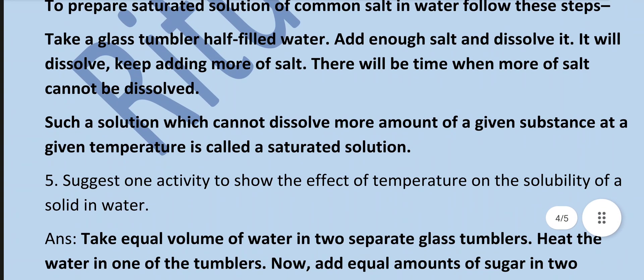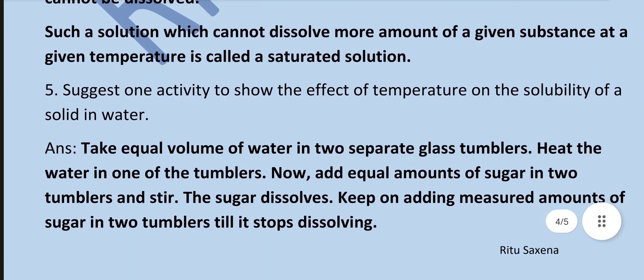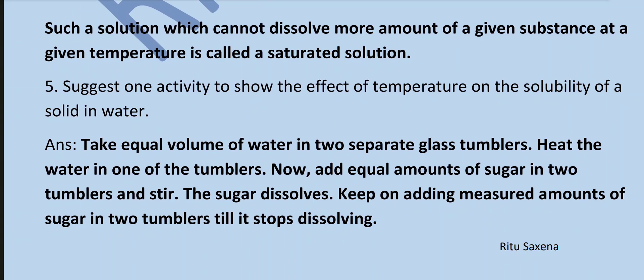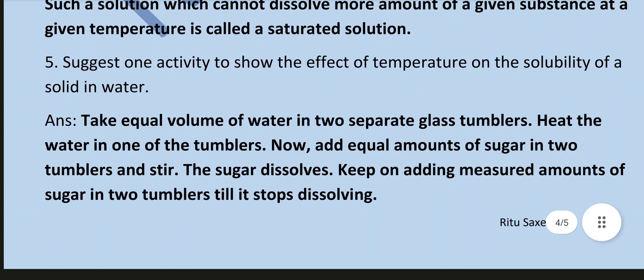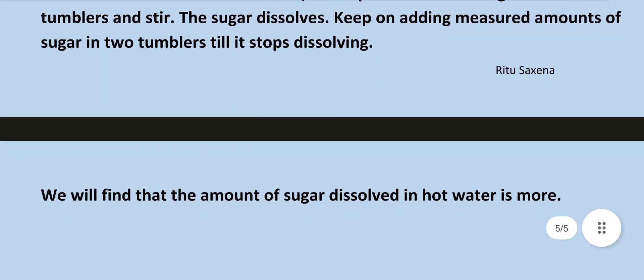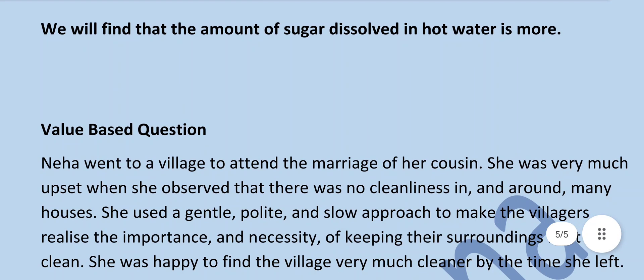Suggest one activity to show the effect of temperature on solubility of a solid in water. Take equal volumes of water in two separate glass tumblers and heat water in one of them. Add equal amounts of sugar to both tumblers and stir. Keep adding measured amounts of sugar to both until it stops dissolving. We will find that the amount of sugar dissolved in the heated water is more.